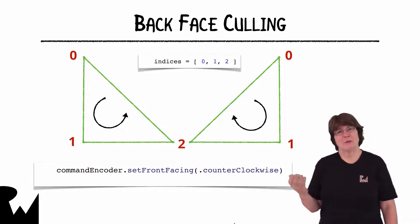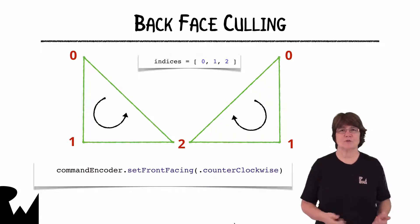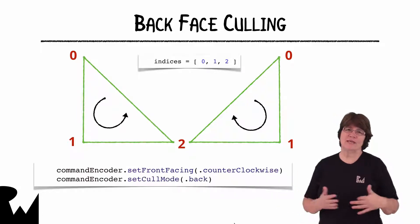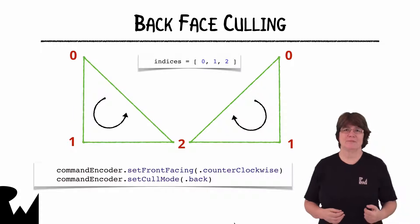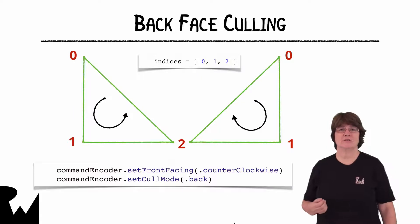Here we tell the command encoder that the triangle vertices are in counterclockwise order. The technical term for this order is the winding order of the triangle. We then set the cull mode to be back. This means that any triangles that are rendered clockwise are going to be culled.